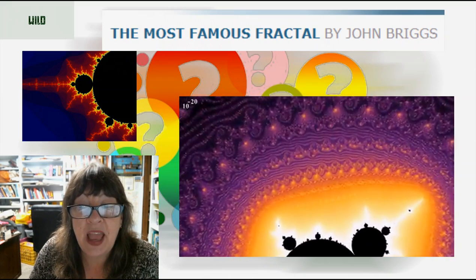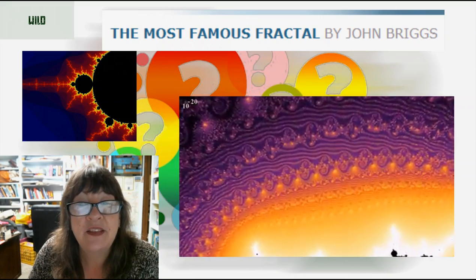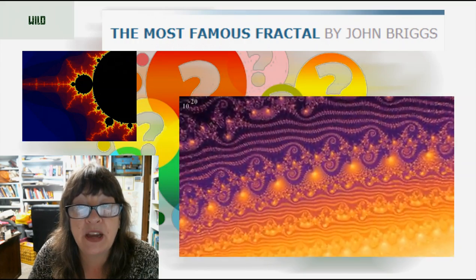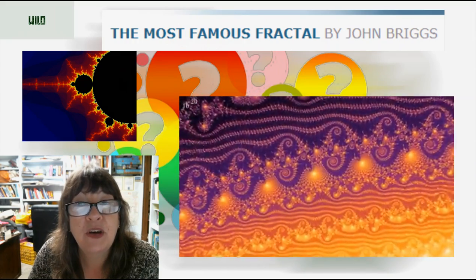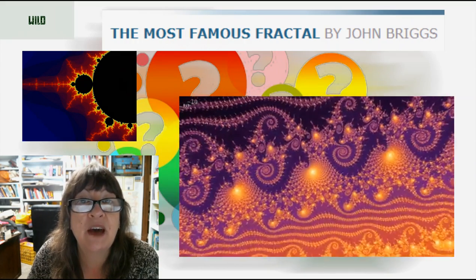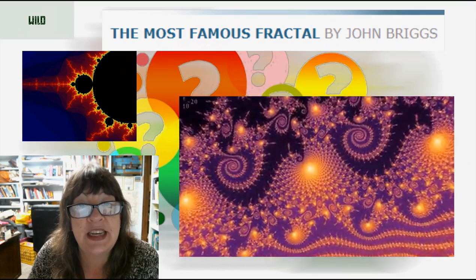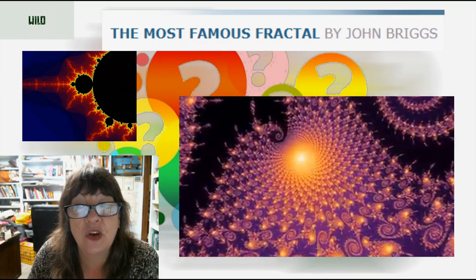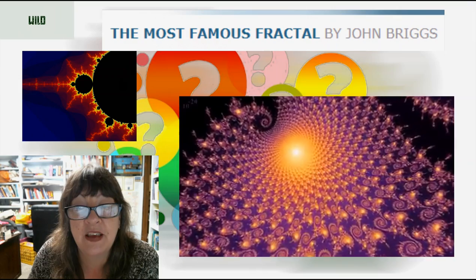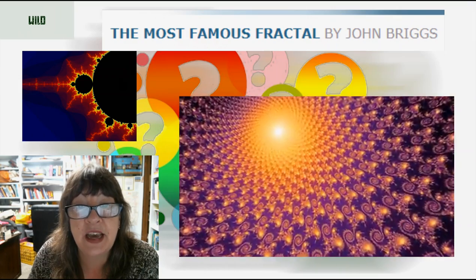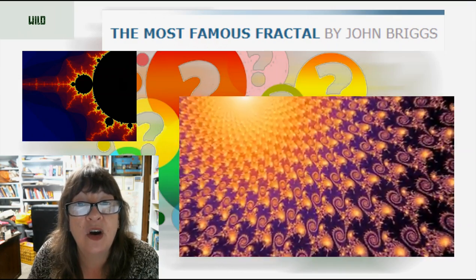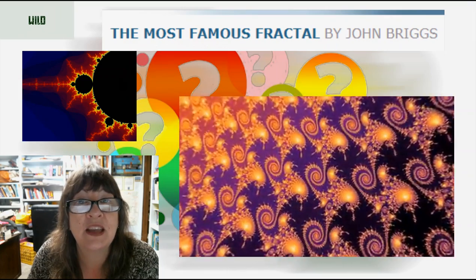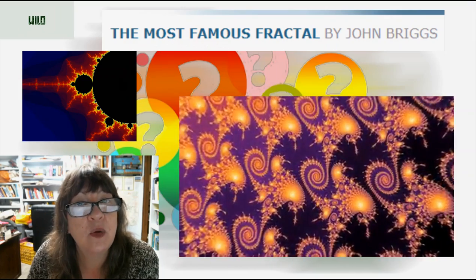The boundary area of this set is infinitely complex — therefore fractal — because it is possible to bring out finer and finer detail. Computer graphics artists call the process of unfolding the detail zooming in on the set's boundary, or magnifying it. Isn't that wild?